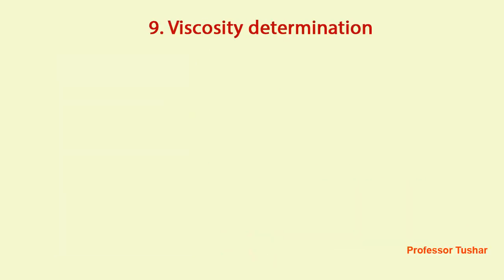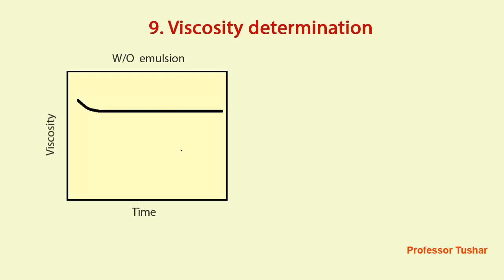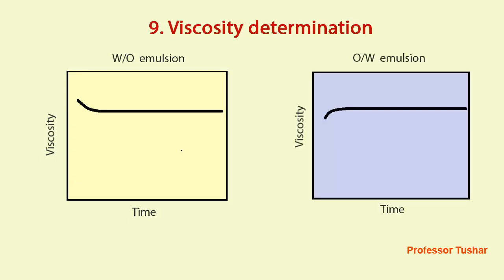Viscosity determination. Immediately after the preparation of water and oil emulsion, the viscosity decreases slightly and it is constant throughout the shelf life. In the case of oil and water emulsion, initially after some time, viscosity increases, and then it is stable throughout the shelf life of the product.